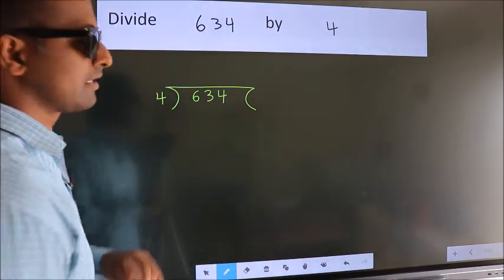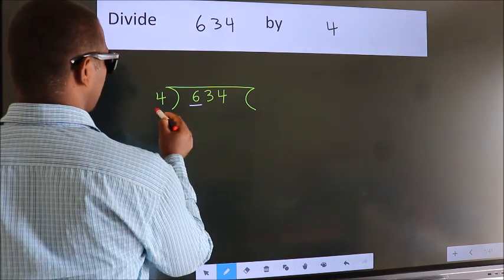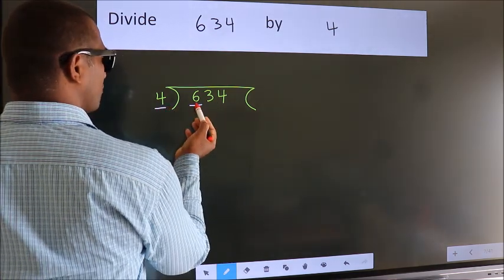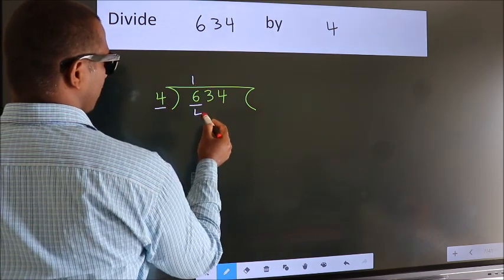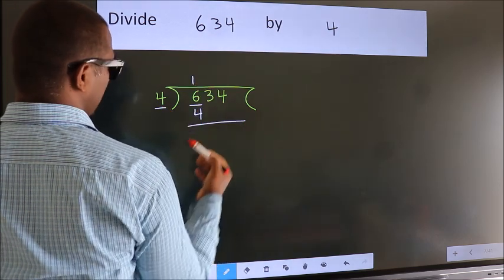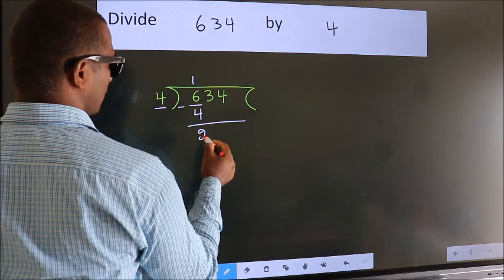Next. Here we have 6, here 4. A number close to 6 in the 4 table is 4 once, which is 4. Now we subtract. We get 2.